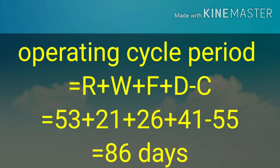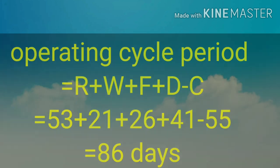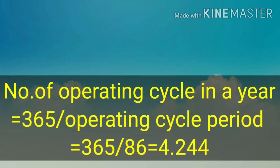The significance of an 86-day operating cycle period is that whatever money we invest today will come back only after 86 days. We need to continuously invest in the business for 86 days; only from the 87th day can we reuse returning money. If we can reduce the raw material storage period, work in progress period, finished goods storage period, or debtor collection period — or increase the creditors' period — the operating cycle will shorten and investment in current assets will decrease. The number of operating cycles in a year = 365 ÷ 86 = 4.244, meaning we can do 4.244 cycles of business in a year with the same money.